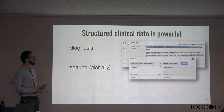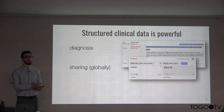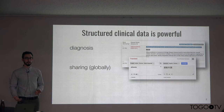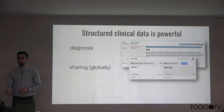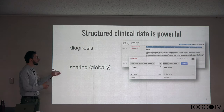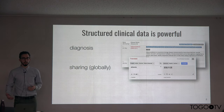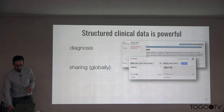Having structured data also allows us to share information globally. If the information is on paper or even in textual notes, those do not necessarily translate well into other languages. But when we have ontologies like the Human Phenotype Ontology, you can translate that one time, and then all of the data represented using those ontologies can be communicated and used across different language areas around the world.